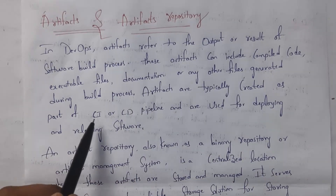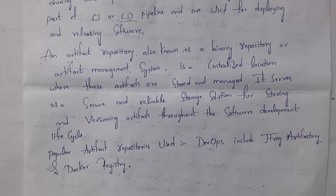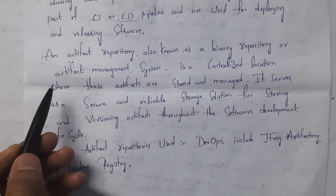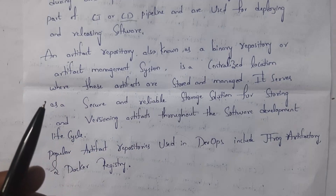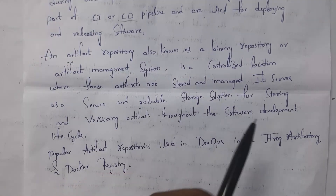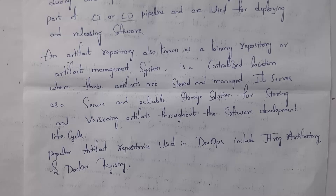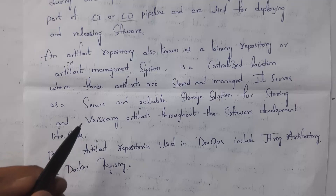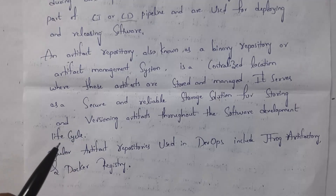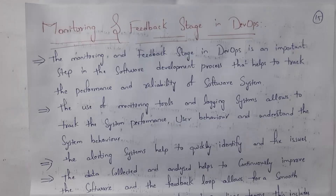An artifact repository is also known as a binary repository or artifact management system. It is a centralized location where artifacts are stored and managed. It serves as a secure and reliable storage solution for storing and versioning artifacts through the software development life cycle. Not only do we store artifacts, we also provide security so no hackers can access them. The two popular artifact repositories in DevOps are JFrog Artifactory and Docker.